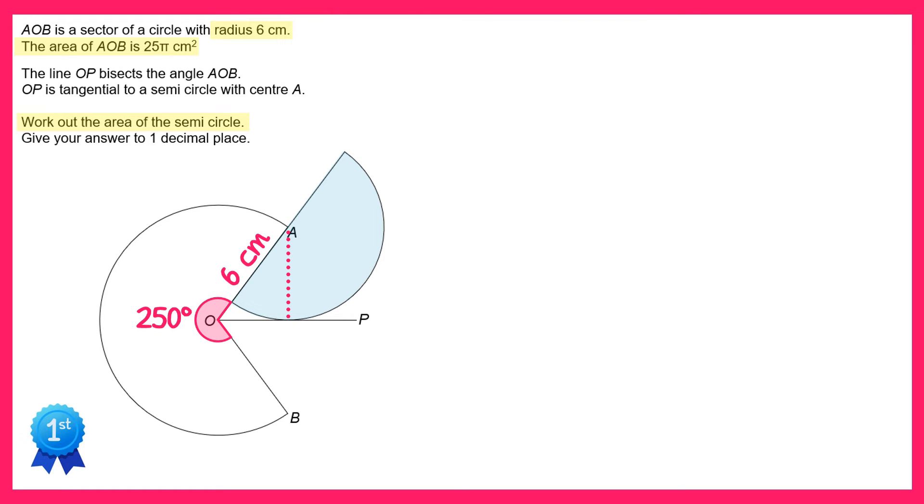We have the angle inside the major sector, 250 degrees, and I'm going to mark on the angle on the outside of that sector here. Both of those angles must add up to 360, so the green one is 360 take 250, which is 110. Now we're also told in the question that the line OP bisects the angle AOB. So OP splits that angle in half, so if we half 110 we just get the top bit. Half of 110 is 55 degrees.